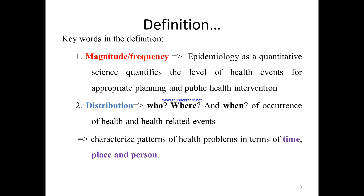That's distribution — who, where, when. This is very important for the occurrence of health and health events. Who? Is it under-five children, pregnant mothers, or older people? Where? The place, geographical area — is it Thailand or another region? When? The time it occurs — at the time of rainy season, after rainy season, or at the time of dry season? This is very important to characterize the pattern of health problems in terms of time, place, and person.